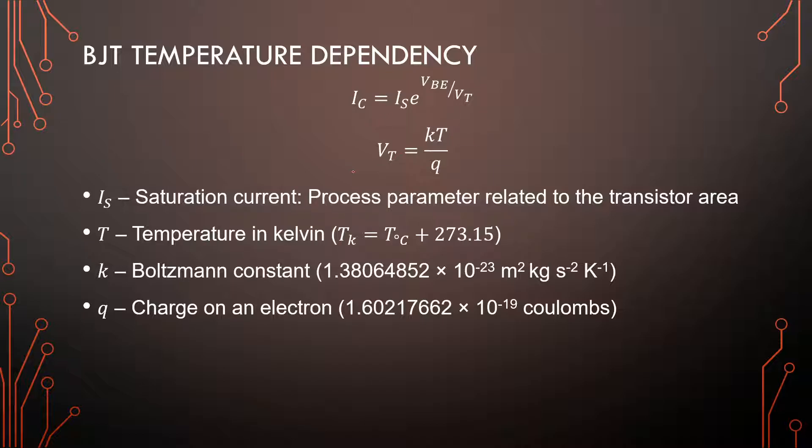And that brings us to our thermal voltage. It can be calculated with KT over Q where K is the Boltzmann's constant, Q is the charge on an electron, and T is the temperature in Kelvin. So that is everything that you need to know about the DC operation. Some of this goes into the AC operation of our BJT in any case.